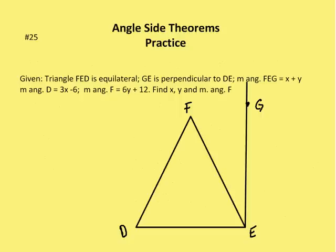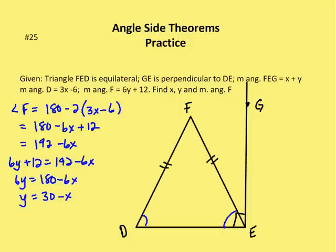Moving on to our second problem. We're given that triangle FED is an equilateral triangle, GE is perpendicular to DE, the measure of angle FEG is equal to X plus Y, the measure of angle D is equal to 3X minus 6, and the measure of angle F is equal to 6Y plus 12. We need to find X, Y, and the measure of angle F. I've marked up the diagram accordingly.